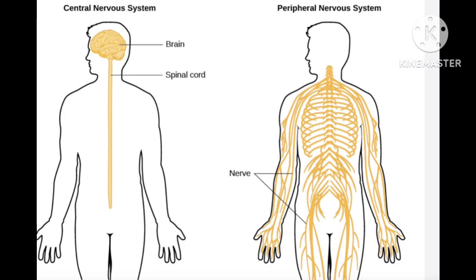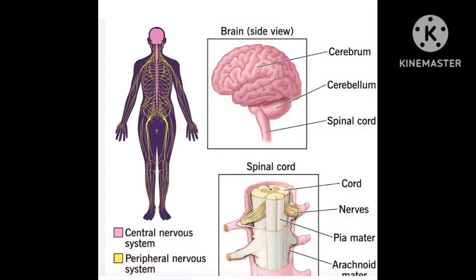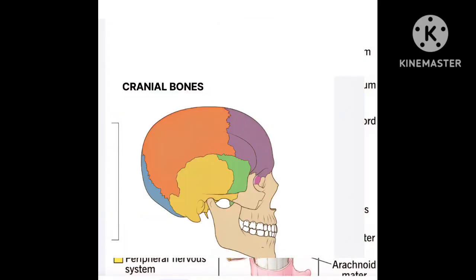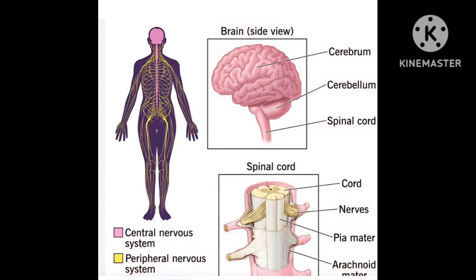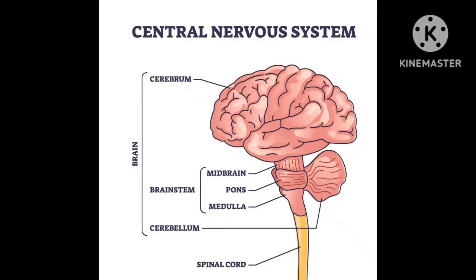Now let us see in detail about the brain. We all know that the brain is present within the skull. It is protected by a thick skull bone called the cranium. Within the cranium we have the brain. The brain is made up of three different parts: cerebrum, cerebellum, and brain stem. Out of these three structures, the cerebrum is considered the largest portion of the brain.